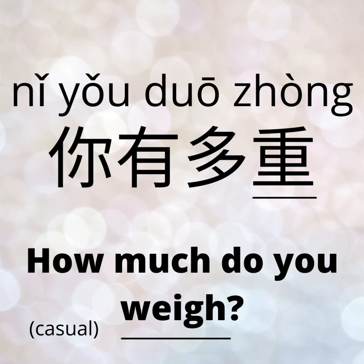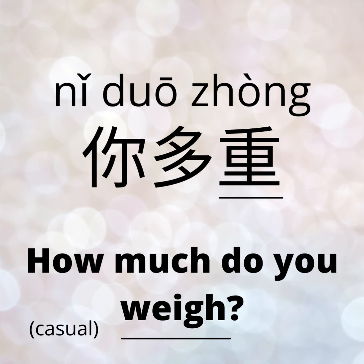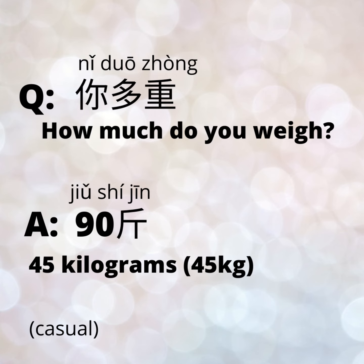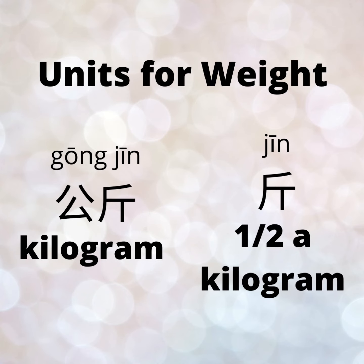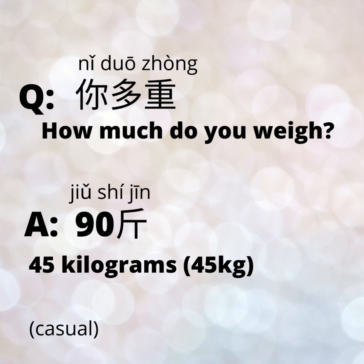For weight, we can ask 你有多重? And like the other sentence, we can also remove the 有, so we can say 你多重? — meaning 'How much do you weigh?' There are actually two units commonly used to measure weight: 公斤, which means kilogram, and 斤, which is 500 grams or half a kilogram. So I could say my weight is 九十斤, which is 90 half-kilograms, or 45 kilograms.